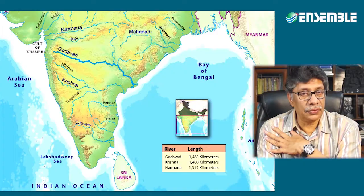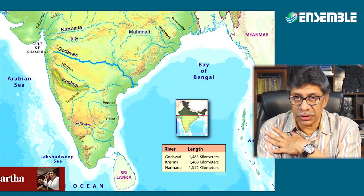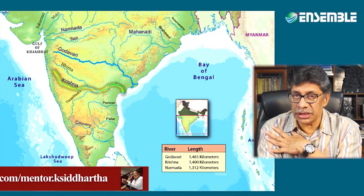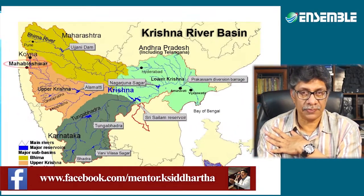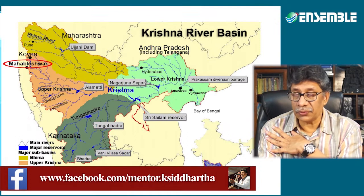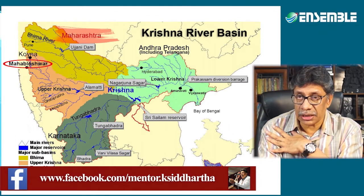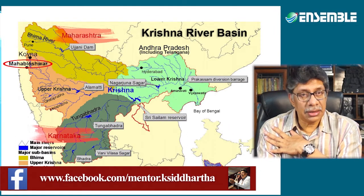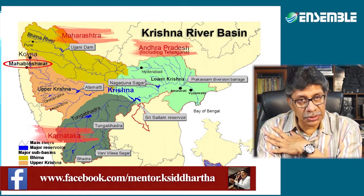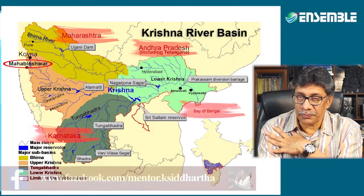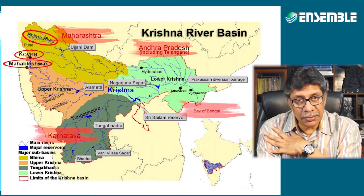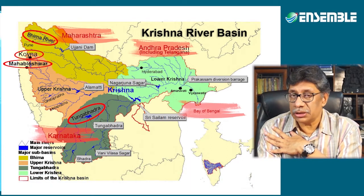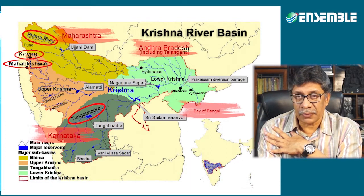The Krishna, which flows south of the Godavari, originates from a spring near Mahabaleshwar. After flowing across Maharashtra, Karnataka and Andhra Pradesh, it falls into the Bay of Bengal. The Koyna, Bhima and Tungabhadra are its major tributaries.